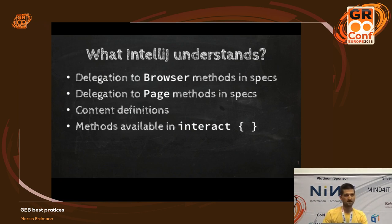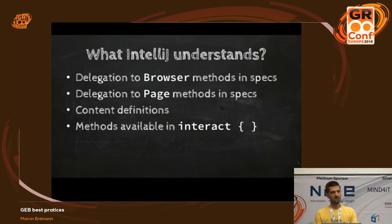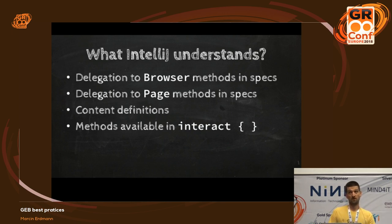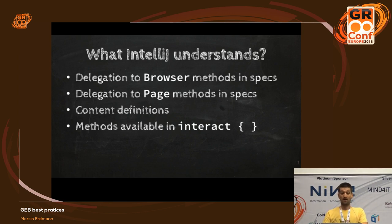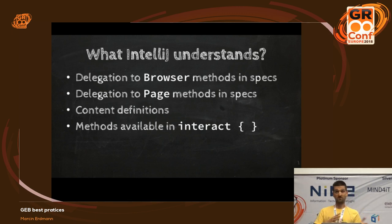So what does IntelliJ understand out of the box? It knows that if you are calling any methods or properties that don't exist in your JEP spec — when you're writing a test and extending from a JEP spec, which is the base type you should use in your JEP specifications — it knows that what you're trying to do is call methods on a browser. Basically it delegates all these calls, and if that property or method does not exist on a browser, it then delegates these calls to the page class. So IntelliJ understands that JEP is doing some dynamic delegation.